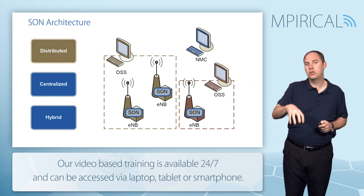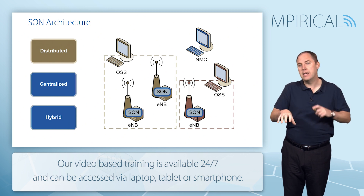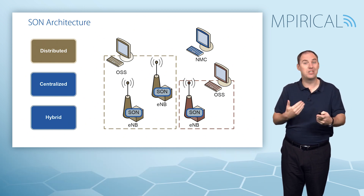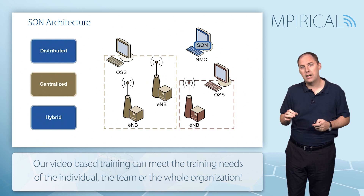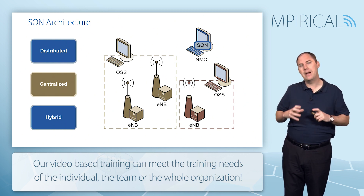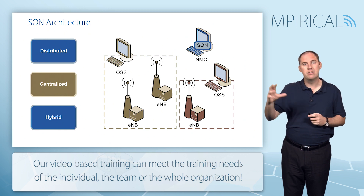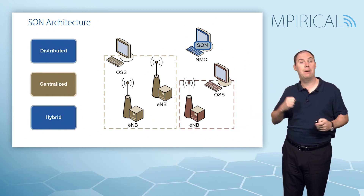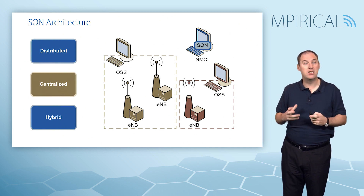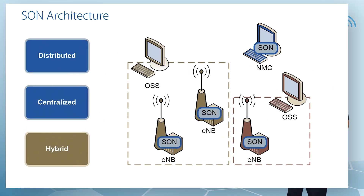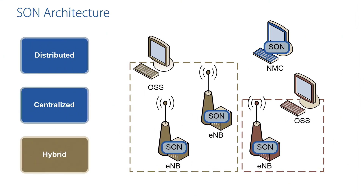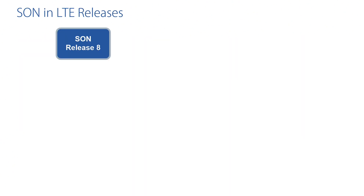The first option is a distributed approach, where SON runs on the network elements — the eNodeBs themselves — making local decisions and using interfaces such as the X2 interface between eNodeBs. The next is centralized, where control moves to the network management center, which uses performance and KPI information to make informed decisions for each eNodeB. The hybrid approach — the direction most people are going — combines local decisions by eNodeBs with centralized decisions by the network management center.